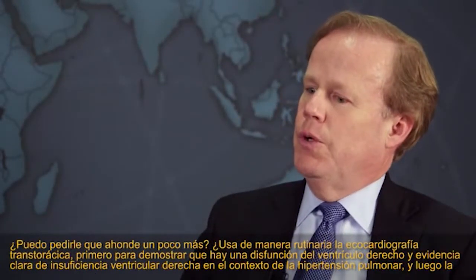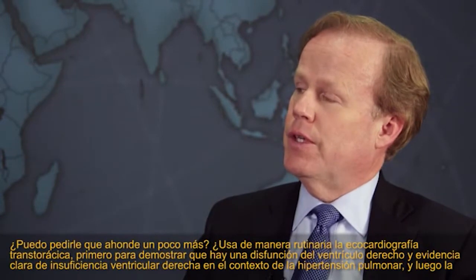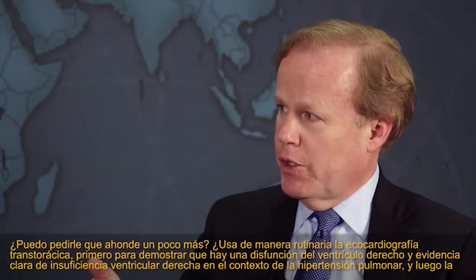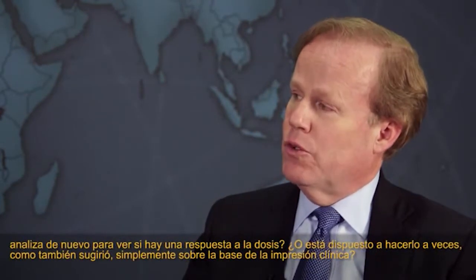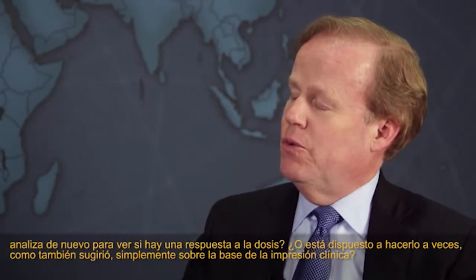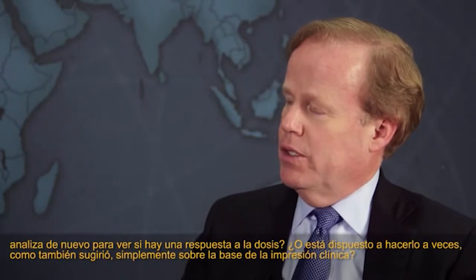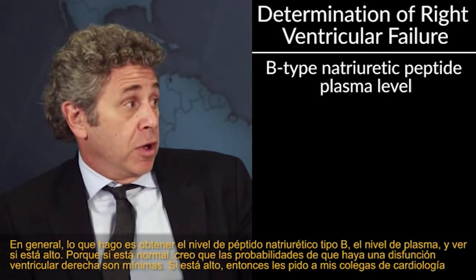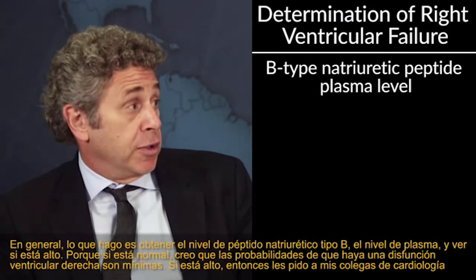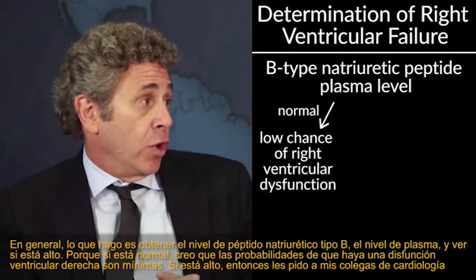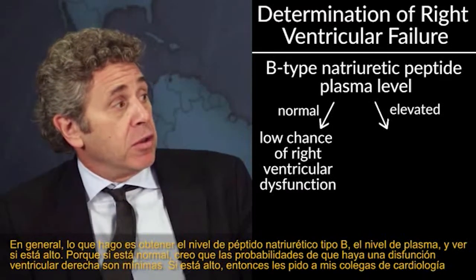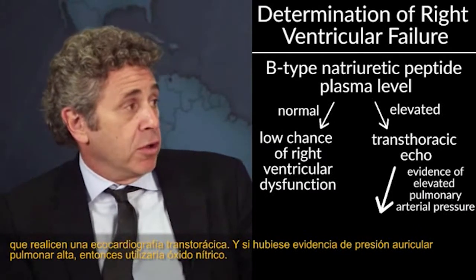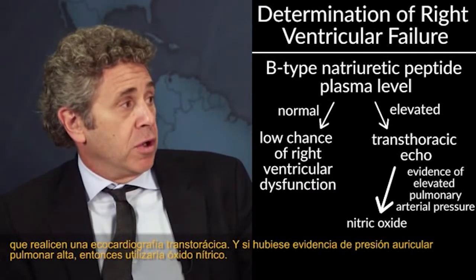So in answer to your question, I do use nitric oxide in subsets of patients, particularly where clinically or echocardiographically the right heart may be struggling and there's elevated pulmonary arterial pressure. Do you routinely use transthoracic echo first? Generally, I get a B-type natriuretic peptide plasma level. If it's normal, the chances of right ventricular dysfunction are minimal. If it's elevated, I ask cardiology colleagues to do a transthoracic echo, and if there's evidence of elevated pulmonary arterial pressure, then I would utilize nitric oxide.